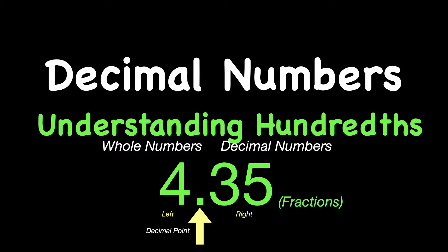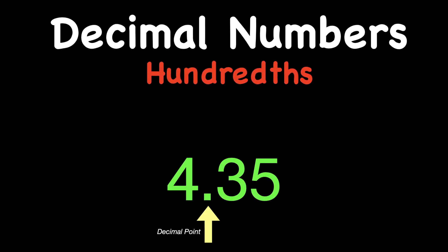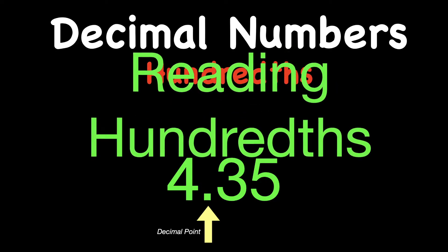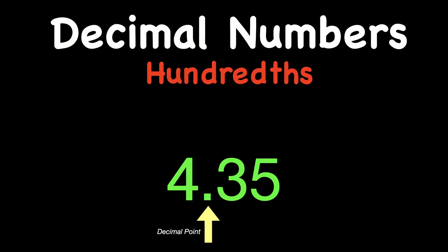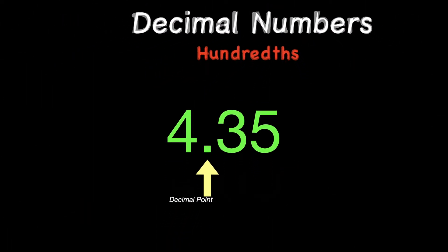Decimal numbers are just fractions, and that 35 you see there is actually the fraction 35 hundredths. The 5 is in the hundredths place value, and that is the focus of today's lesson. So today we're going to work on some models with hundredths. We're going to practice reading numbers with hundredths and look at the place value involving hundredths.